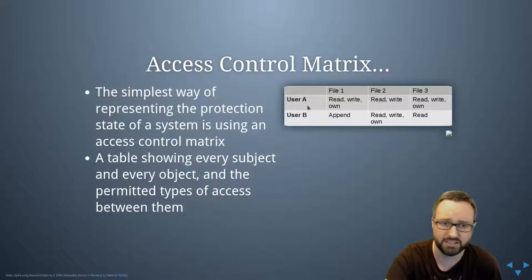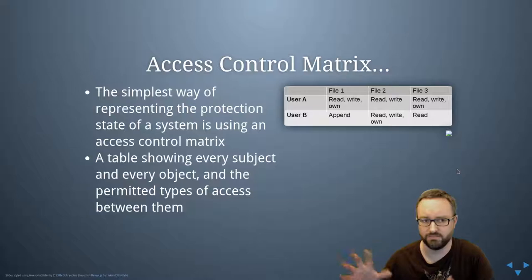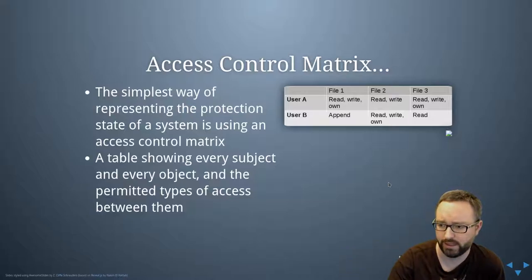You could have a list of all the users and then in this table we could have okay, well file one, in this example user A is allowed to read and write file one and they own it. File two they can read and write, file three they can read write and own. User B can append to the first file, they can read and write and they own that second file, and they can read the third file and so on. You can imagine just this massive table that describes all that information.